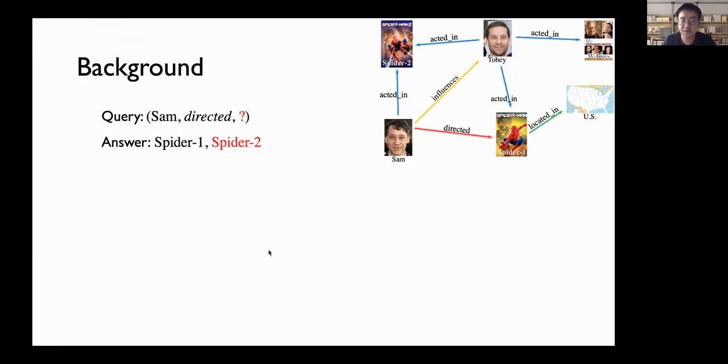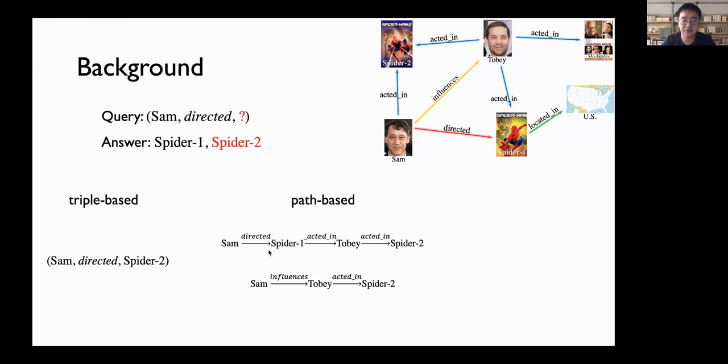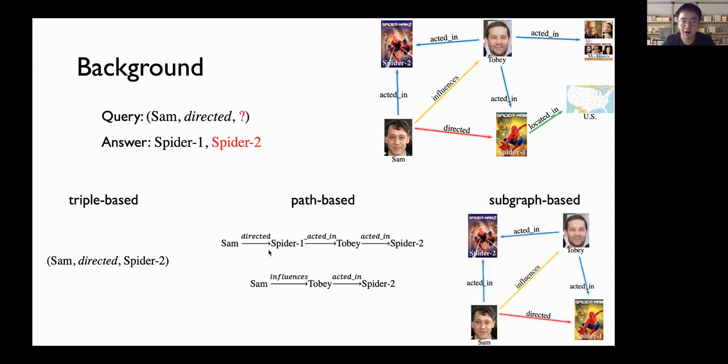There are three types of approaches in the literature. We can directly evaluate scores on triples based on their embeddings, or use a set of paths to support reasoning, or use subgraph. In comparison, subgraph reasoning is more challenging due to the complex structure.